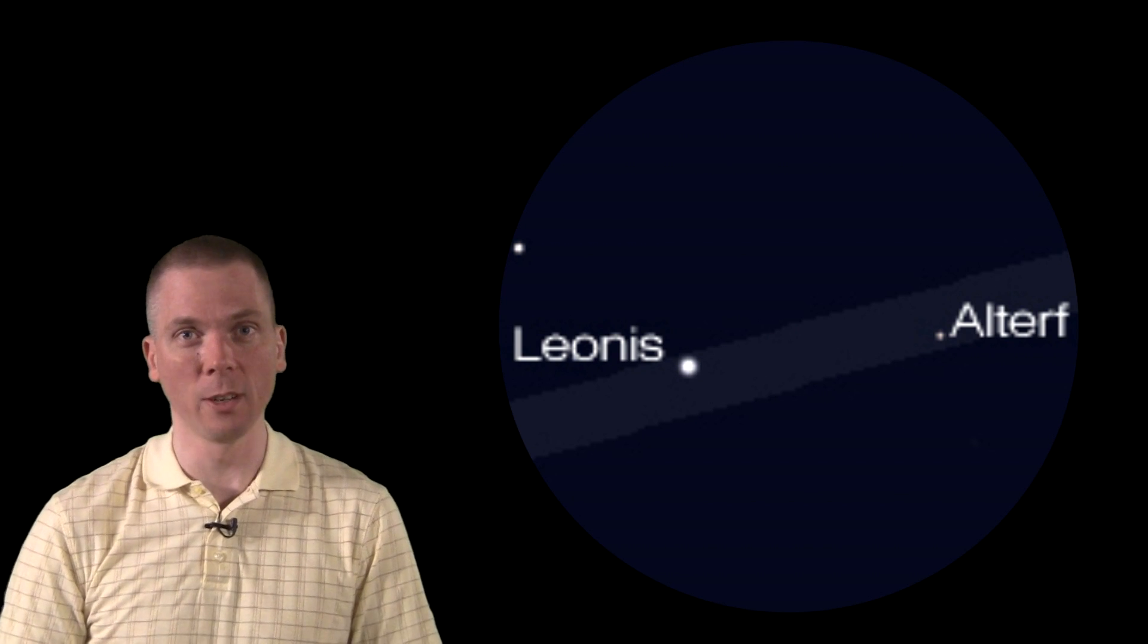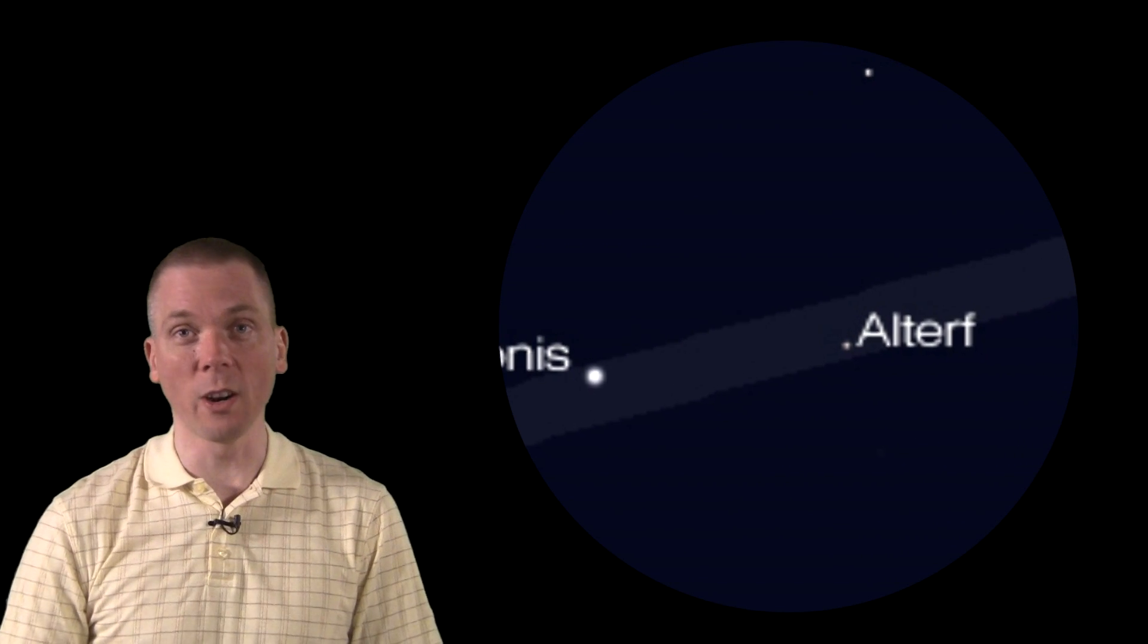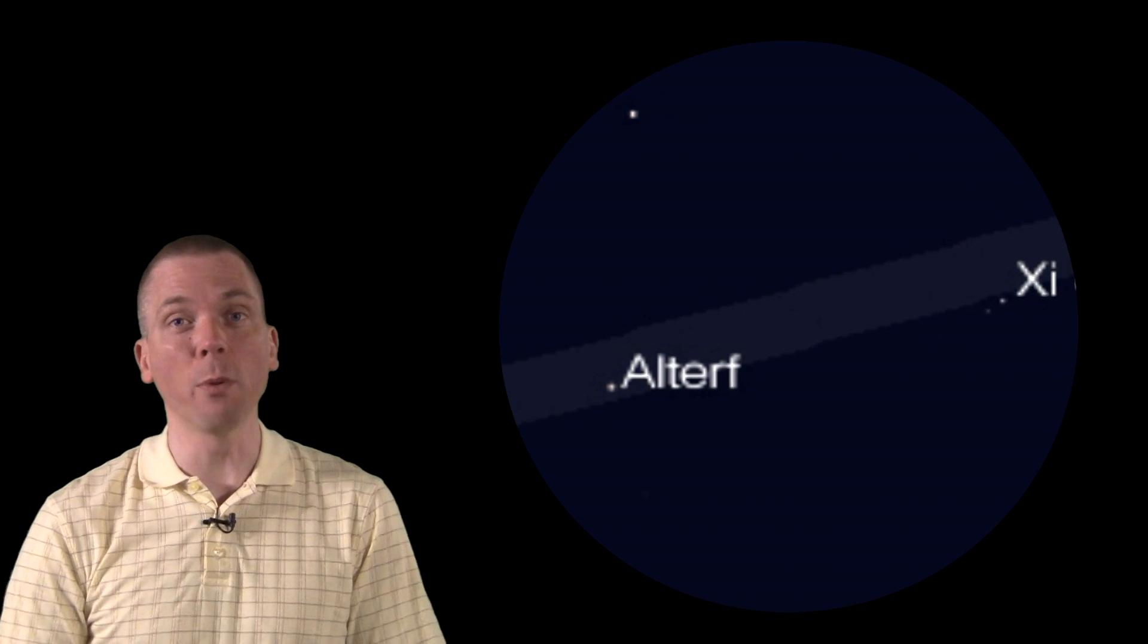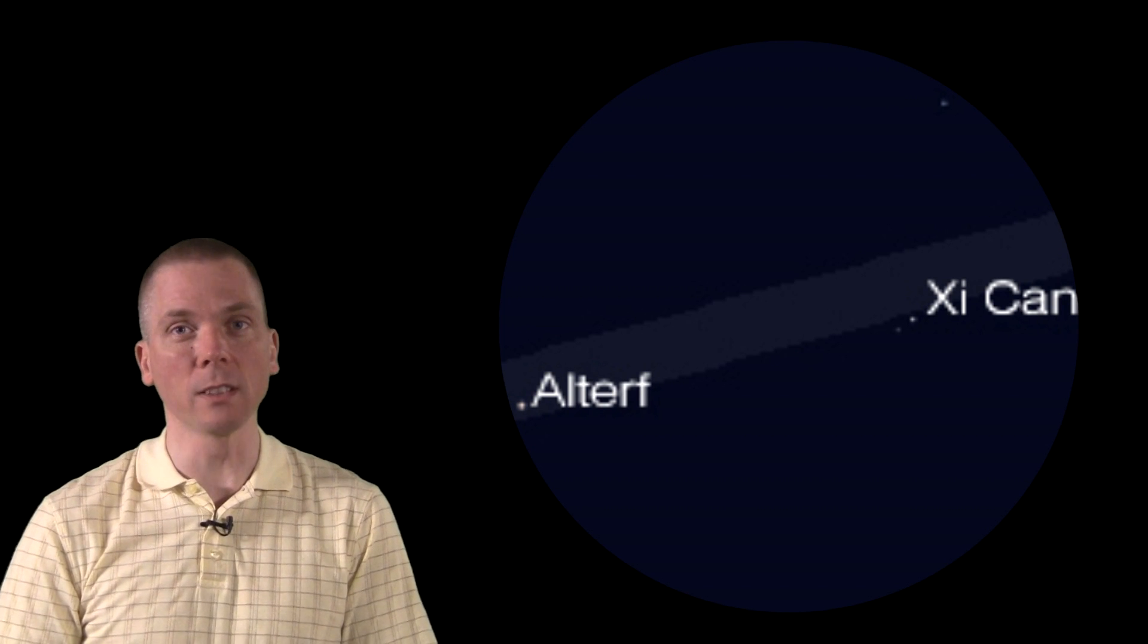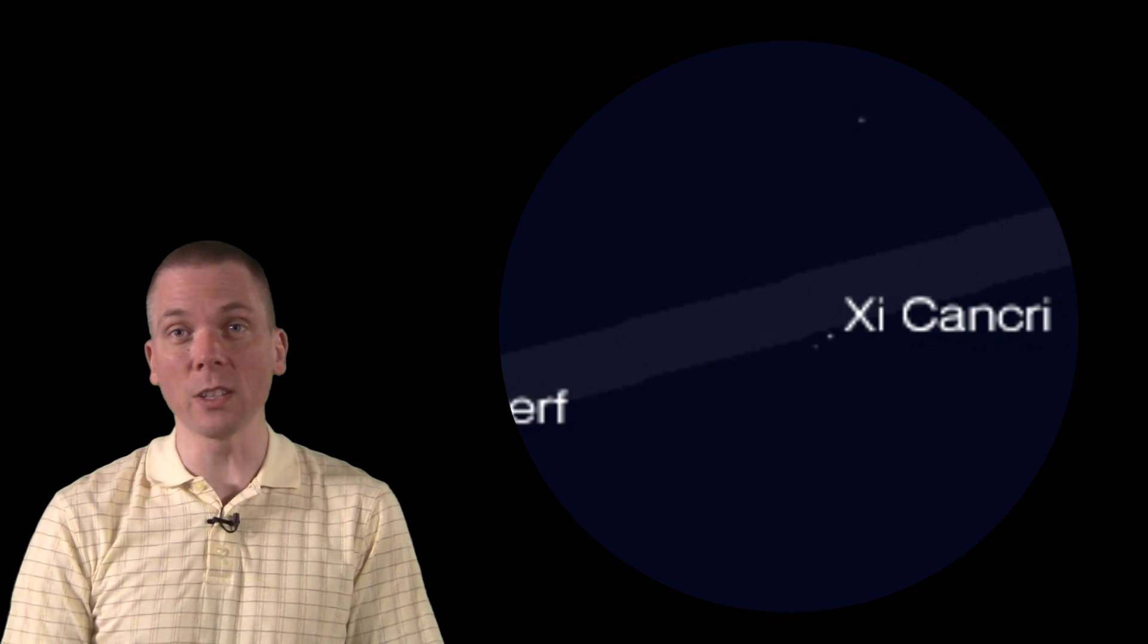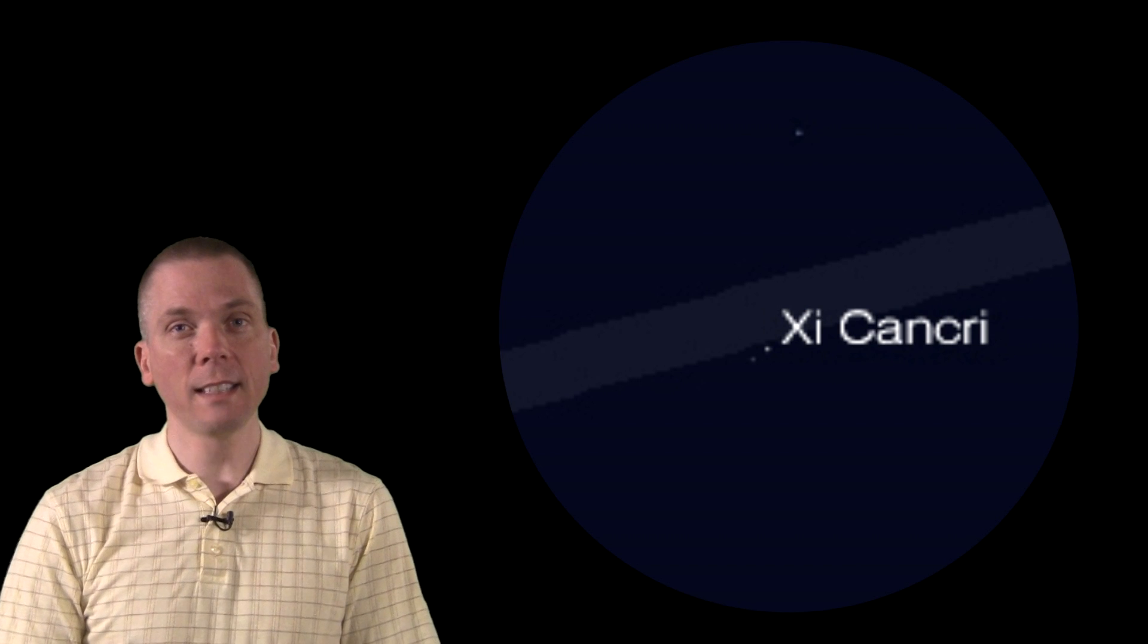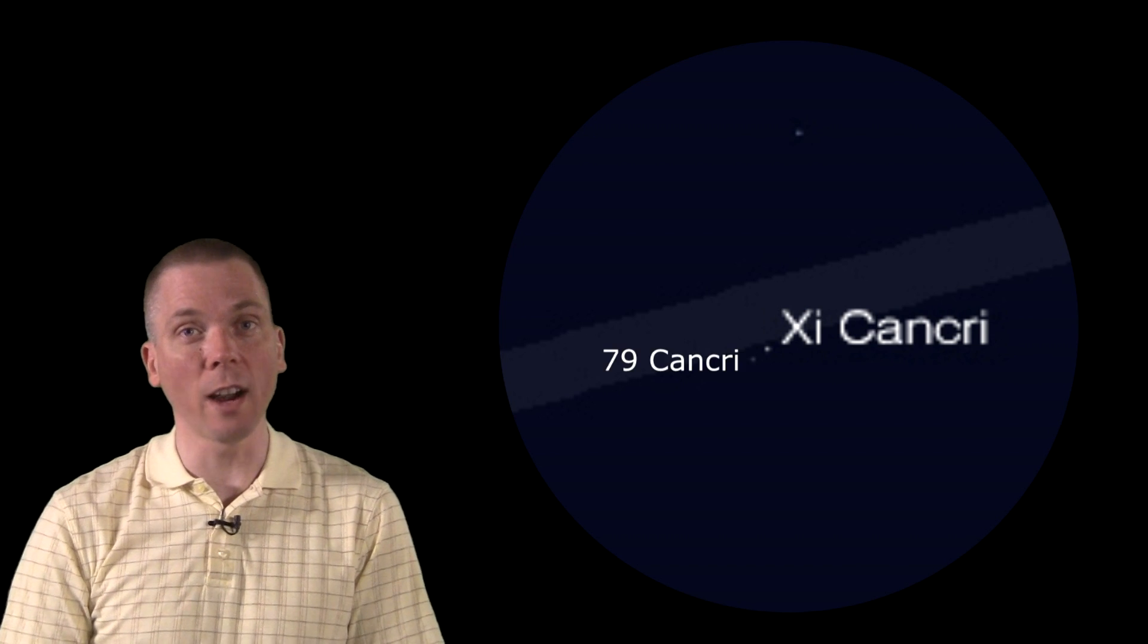In fact, it may be there with Epsilon centered. Now center that star and keep going. Before Alturf leaves the field, you'll see 5.2 magnitude Xi Cancri enter the field. It will be a magnitude fainter than Alturf. 6th magnitude 79 Cancri is right next to it.